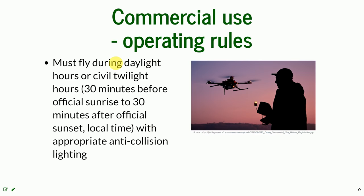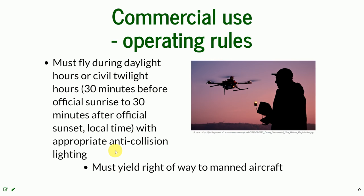It is important that you fly during daylight hours, or it is permissible to fly 30 minutes before official sunrise to 30 minutes after official sunset in local time, which is called civil twilight hours. You must have the appropriate anti-collision lighting. You always must yield right-of-way to a manned aircraft — manned aircraft always have priority over UAS, so just get out of the way.